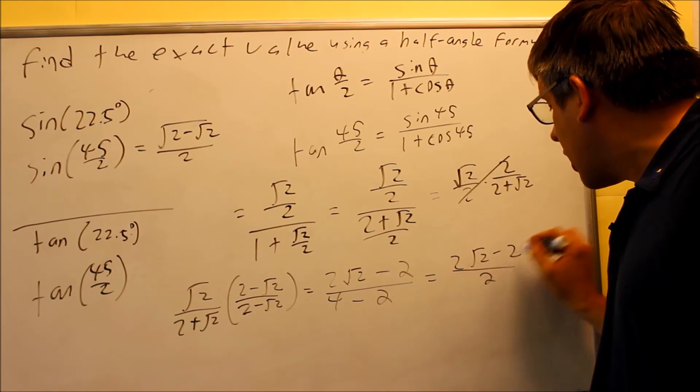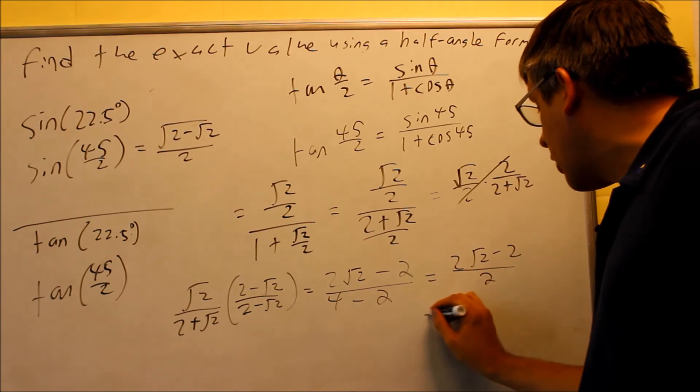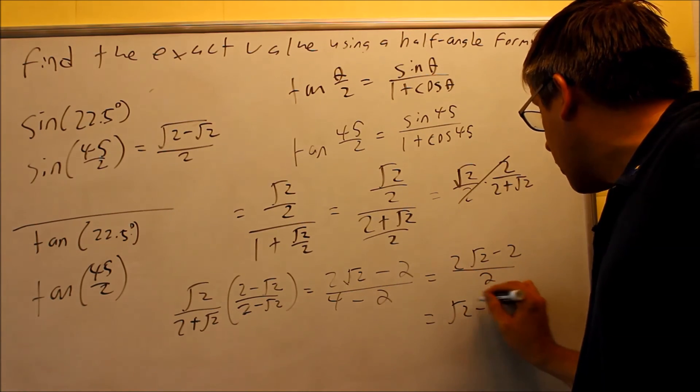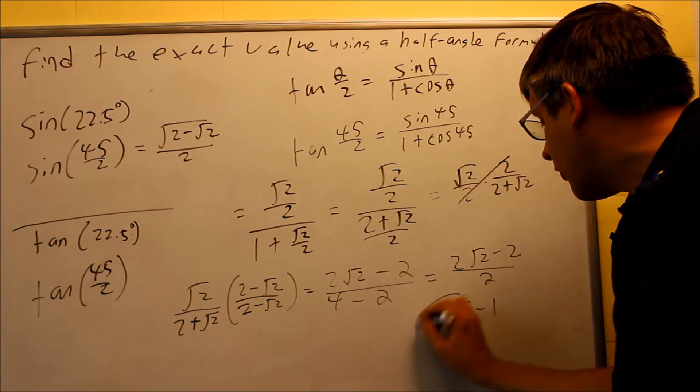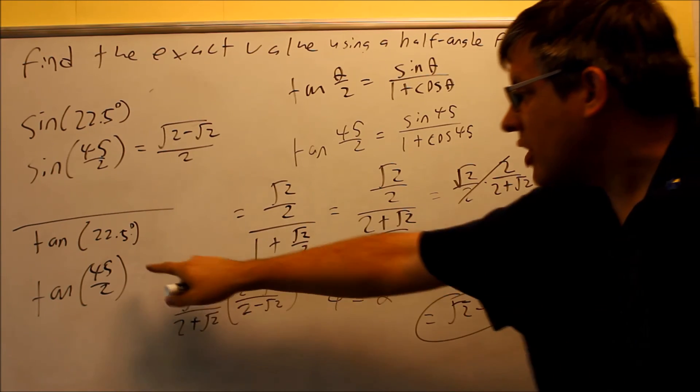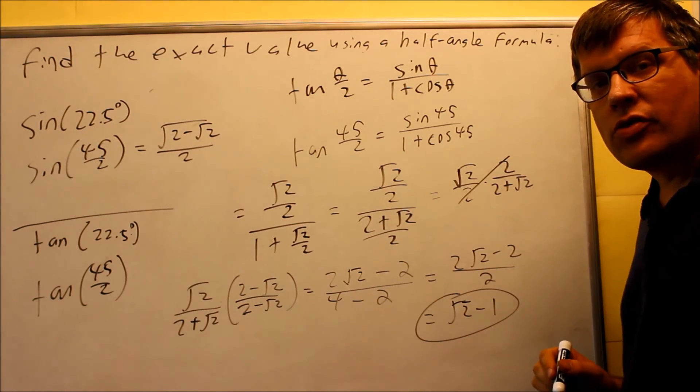However, what you want to do now is break up each of these, and we'll write it as reduce both of those by 2. You would get radical 2 minus 1. We'll divide the first one by 2, and the second one you'll divide by 2. So therefore, this here would be the exact answer for tangent 22.5, which is also the same as tangent 45 over 2.